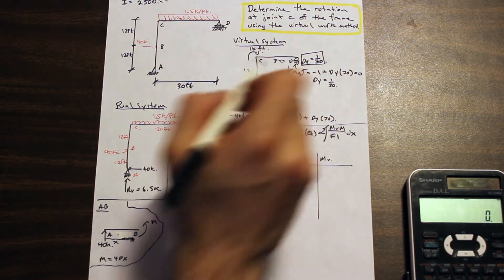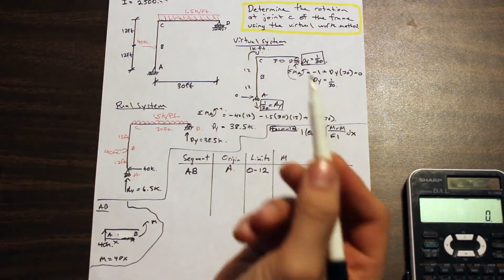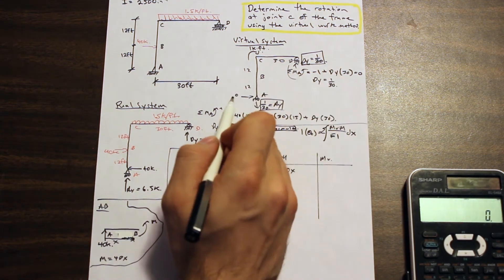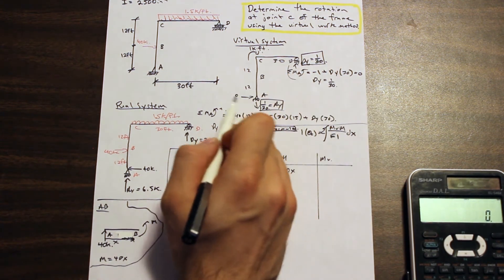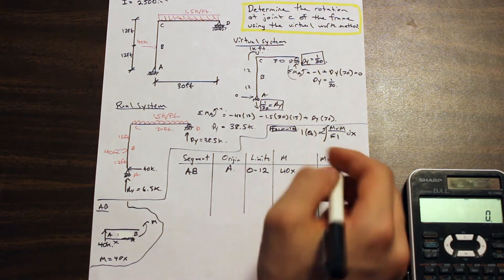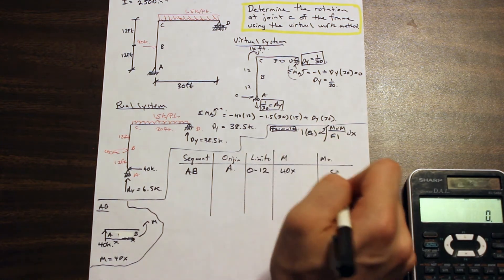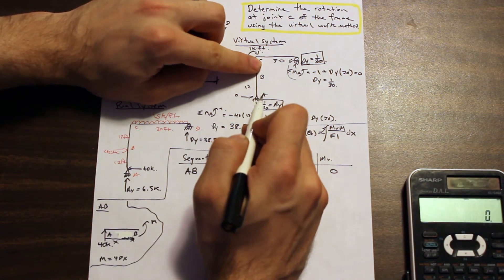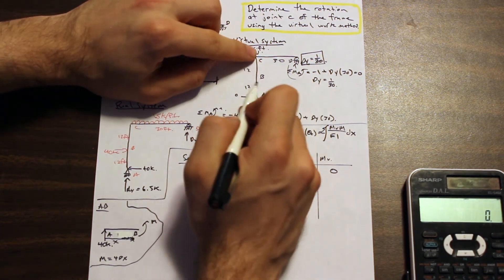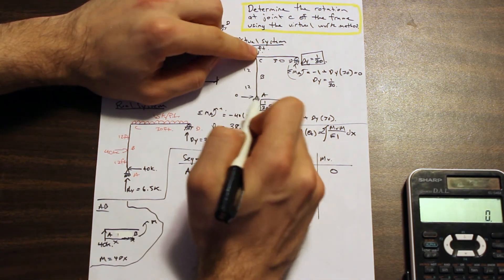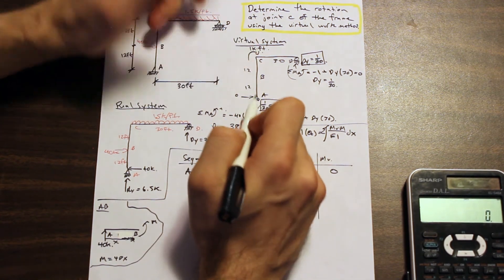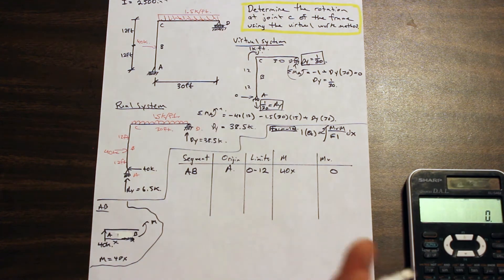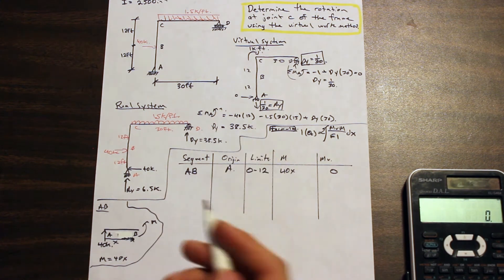For segment AB in the virtual system: if we cut just before B and look at that portion, there are no external forces present, so the moment is zero. M equals zero for AB in the virtual system.